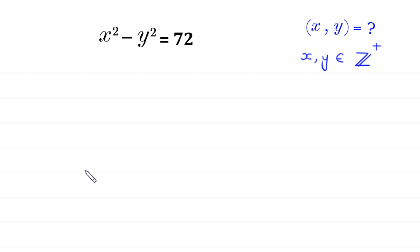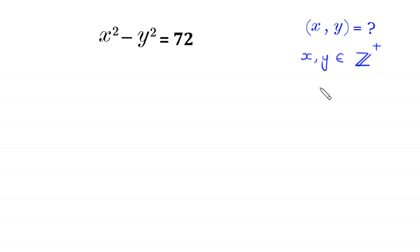Hello, welcome to how to solve this very nice algebra equation. x squared minus y squared is equal to 72. We need to find all possible values of x and y, where x and y are positive integers. It means x is greater than 0 and y is greater than 0.